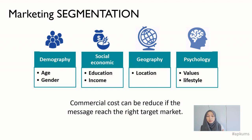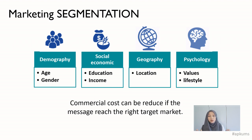So demography is basically the age and the gender. Socio-economic covers education and income. Your geography is your location. And your psychology covers your values and the lifestyle of your customers. So here, how you can apply it — if you identify that your customers are going to be the younger generation, you can actually tailor your marketing